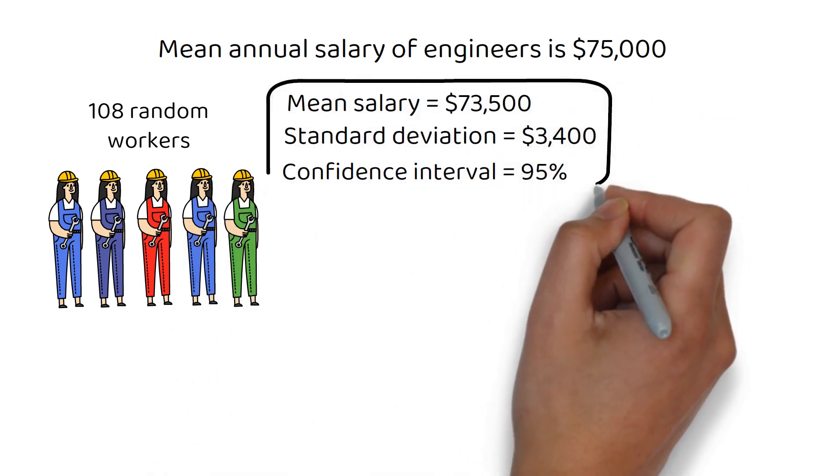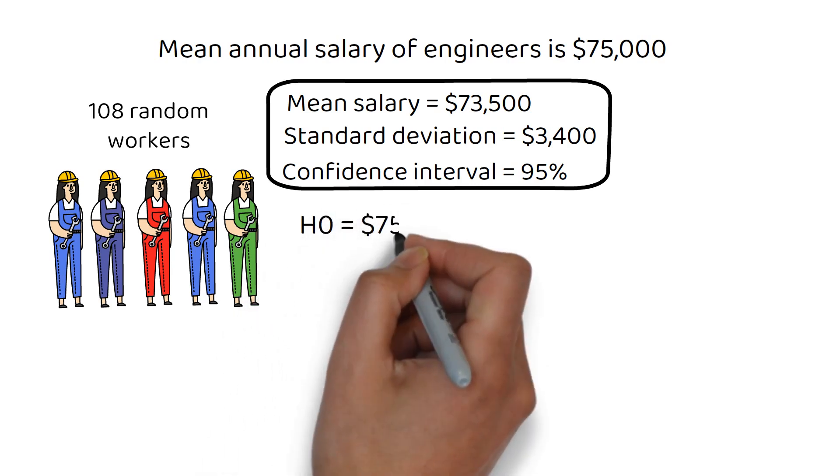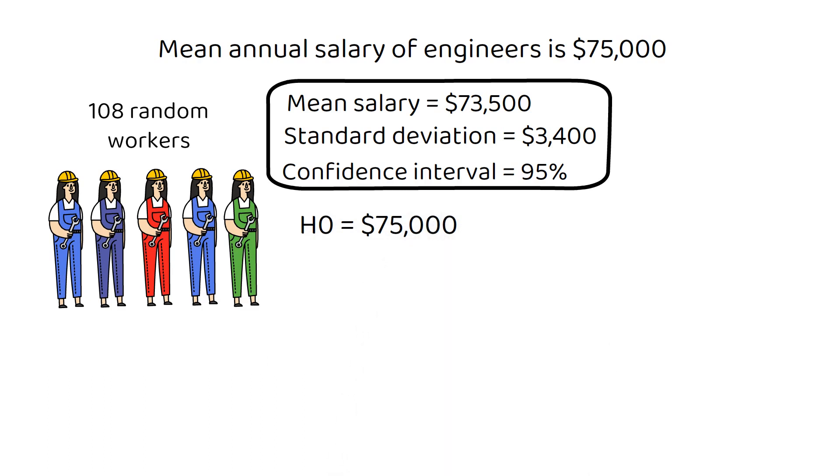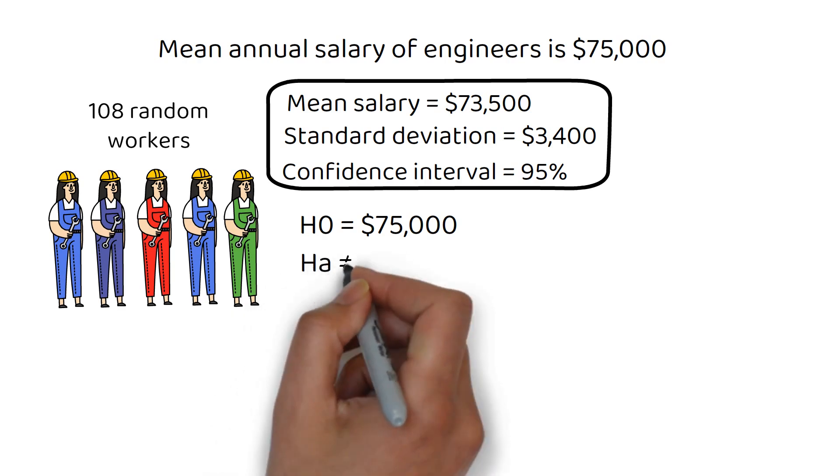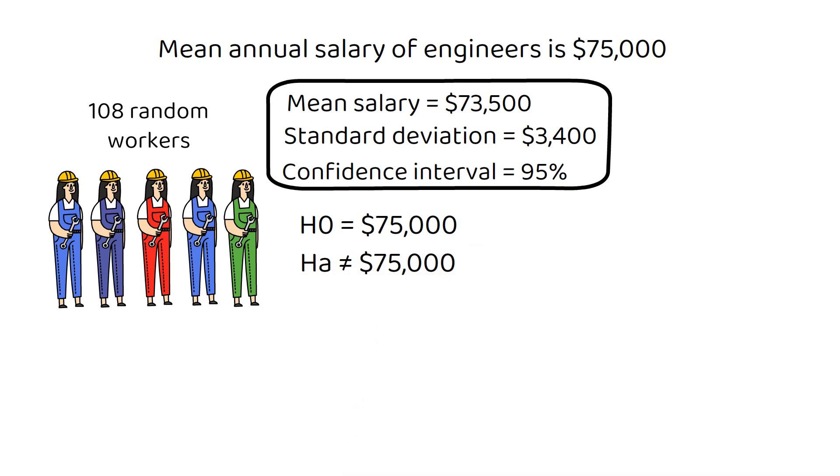To determine whether there's enough evidence to reject the agency's claim using hypothesis testing, we'll follow the same steps as before, but with the updated sample mean. The null and alternative hypotheses are: the null hypothesis is that the mean annual salary of engineers is $75,000. The alternative hypothesis is the mean annual salary of engineers is not $75,000.